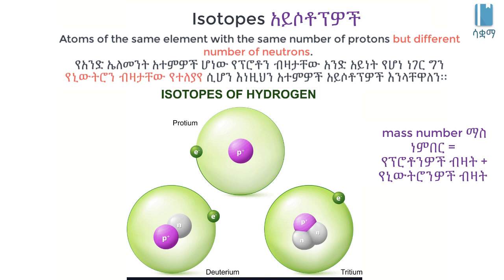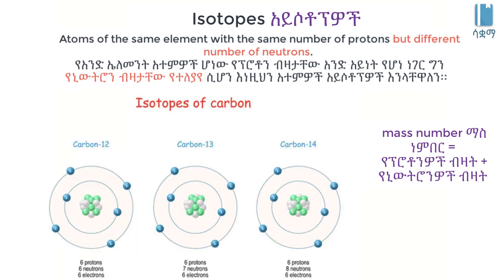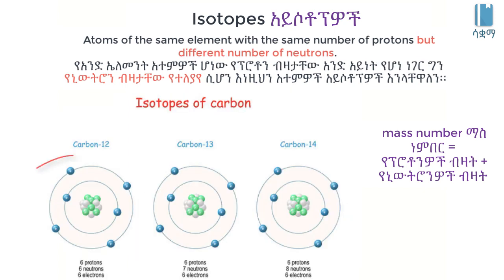The isotope is a neutron. An element's isotopes are atoms of that same element.